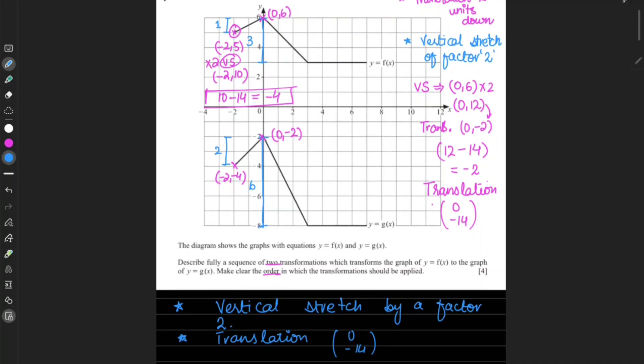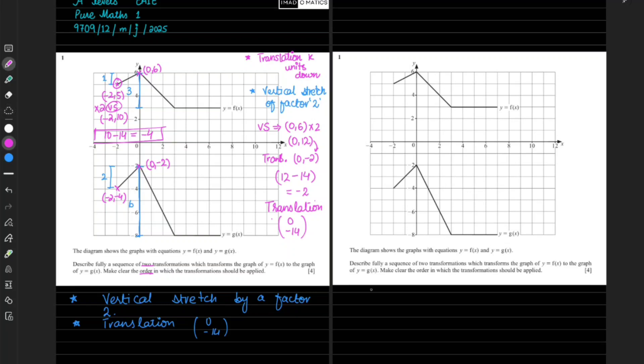Now if you want to look for the translation first and then the vertical stretch, then it would be altogether in a different way. If you want to look into the other way, like translation has happened first and then vertical stretch - the vertical stretch factor is for sure factor 2 because we analyzed that every length is doubled vertically. Whether it is happening firstly or lastly, it is of factor 2.